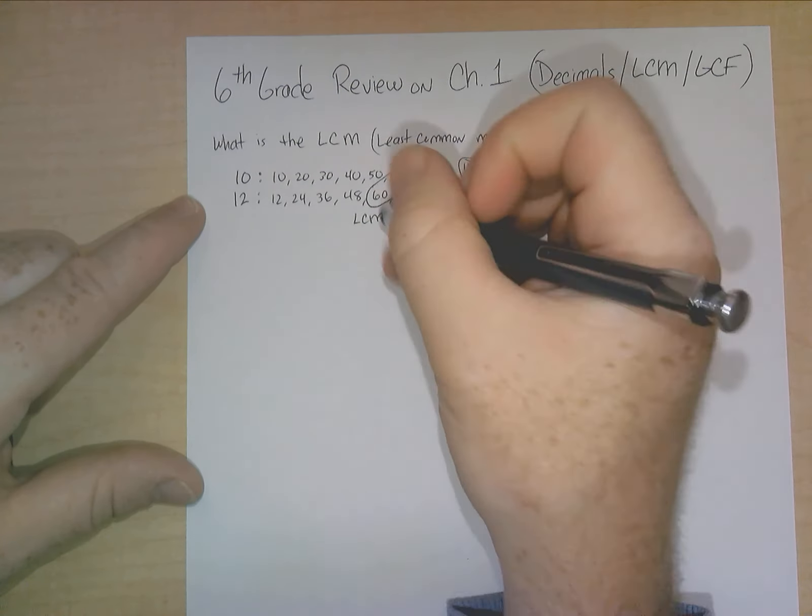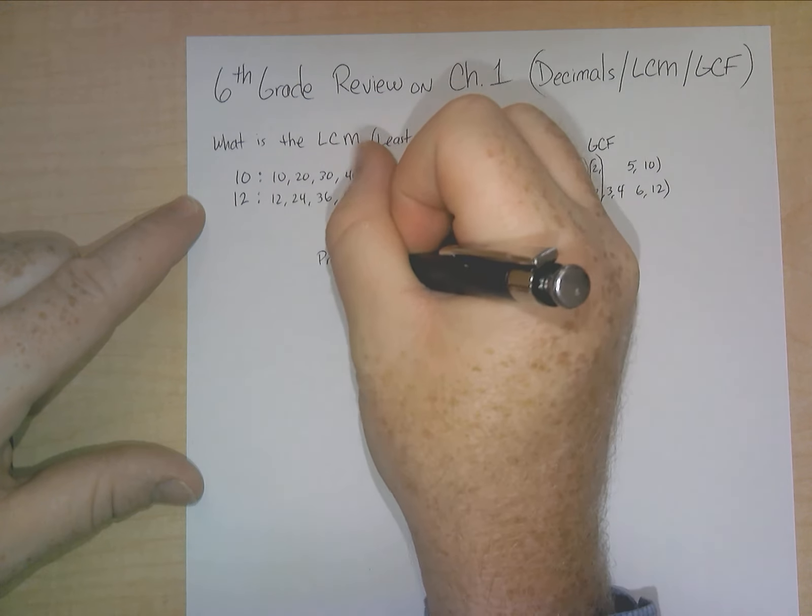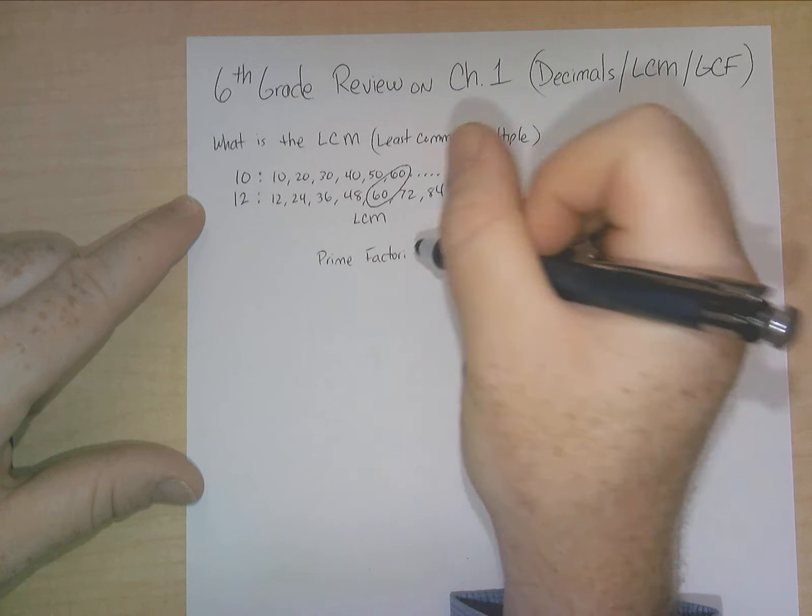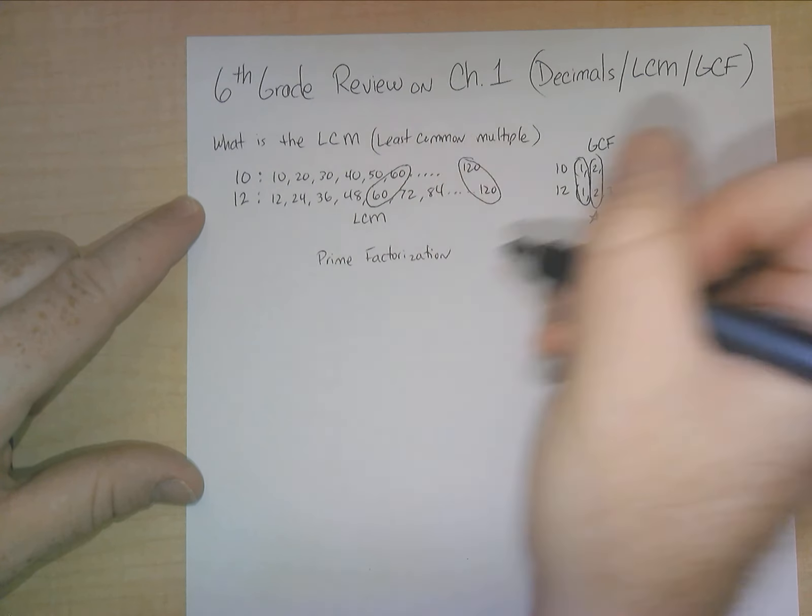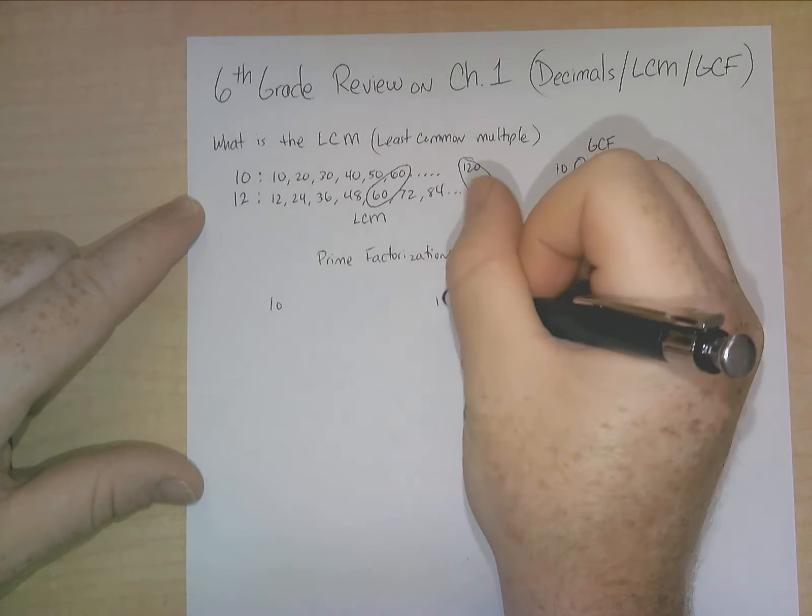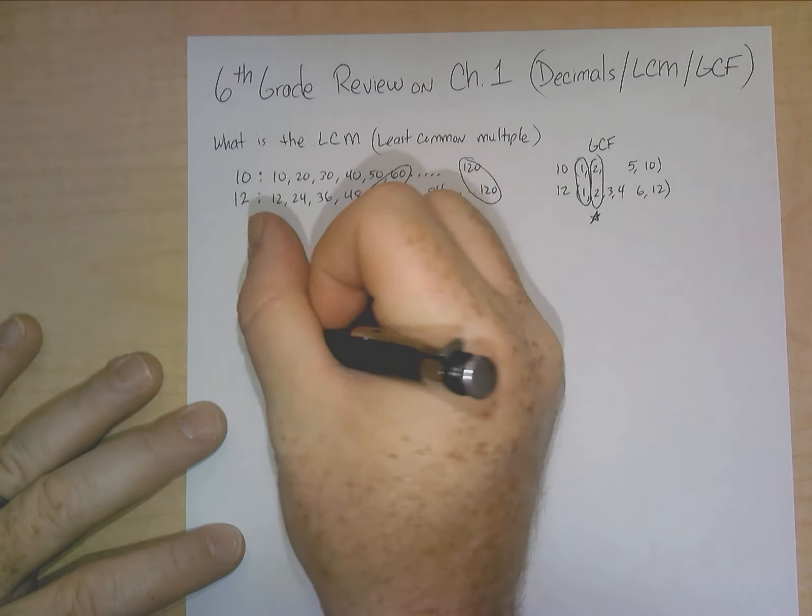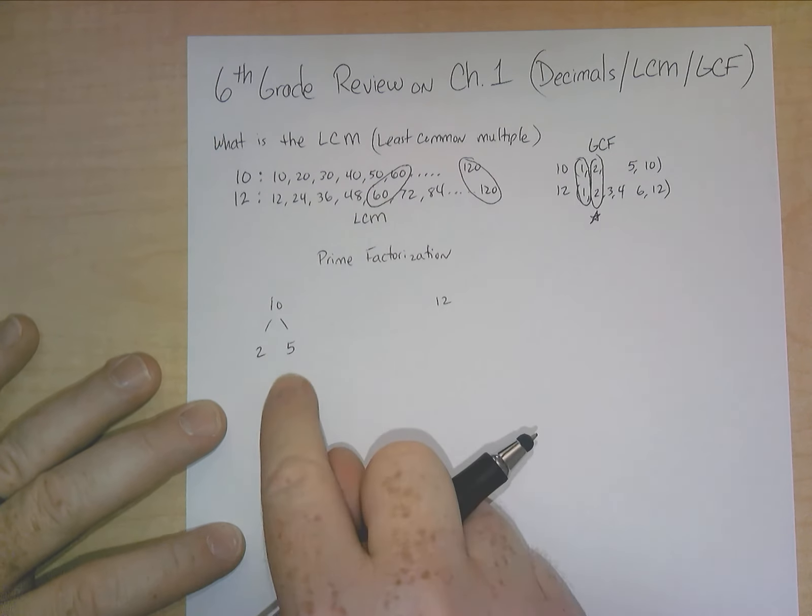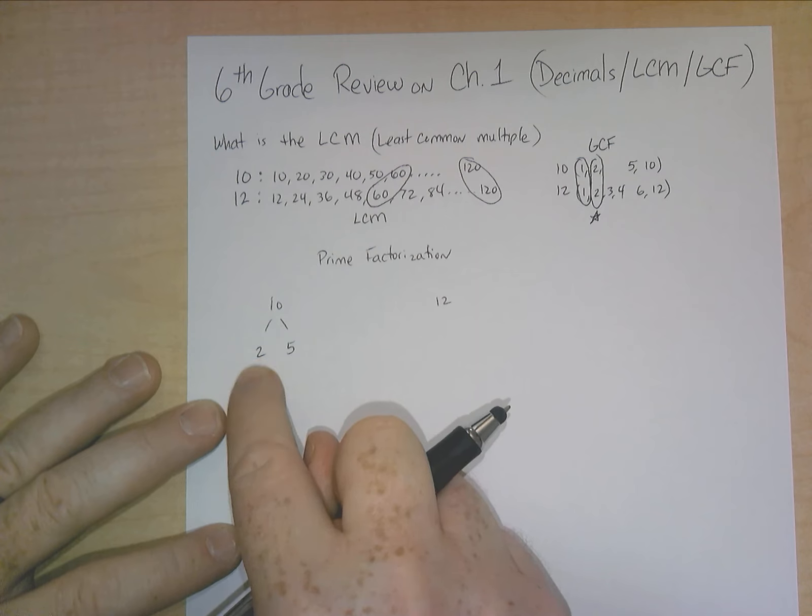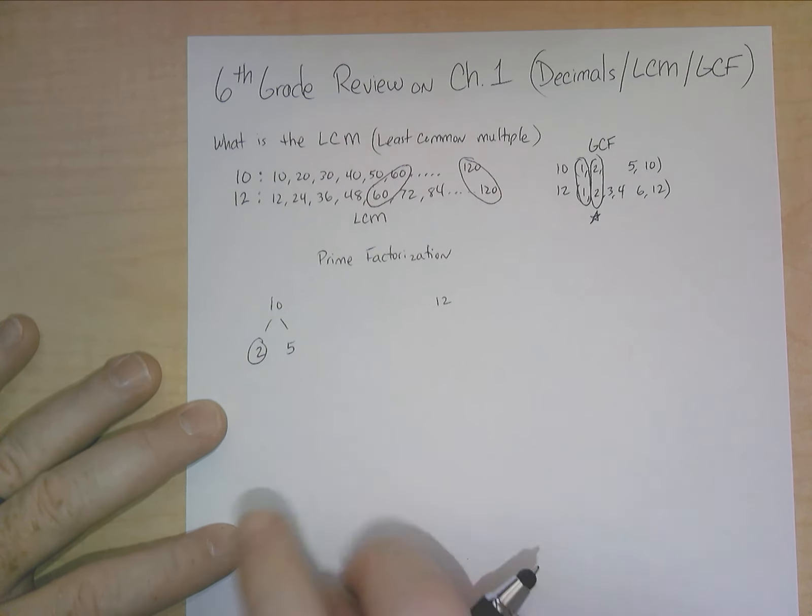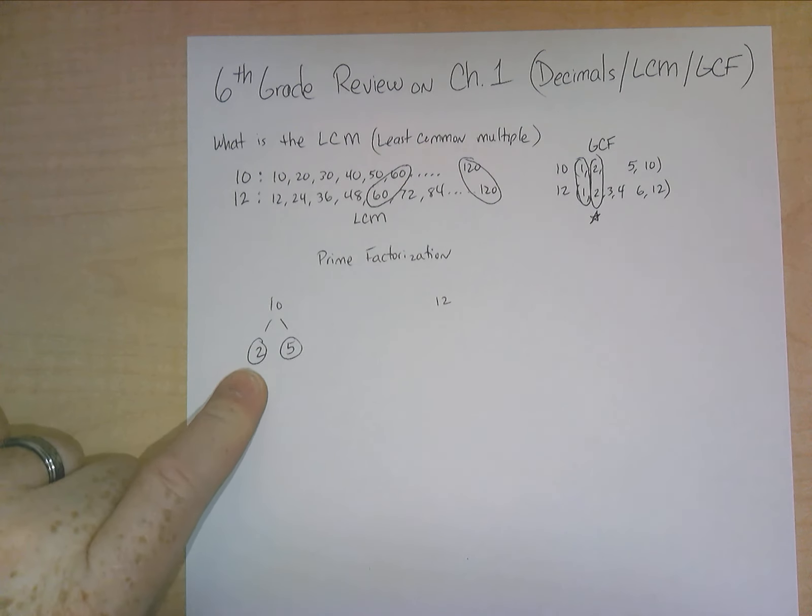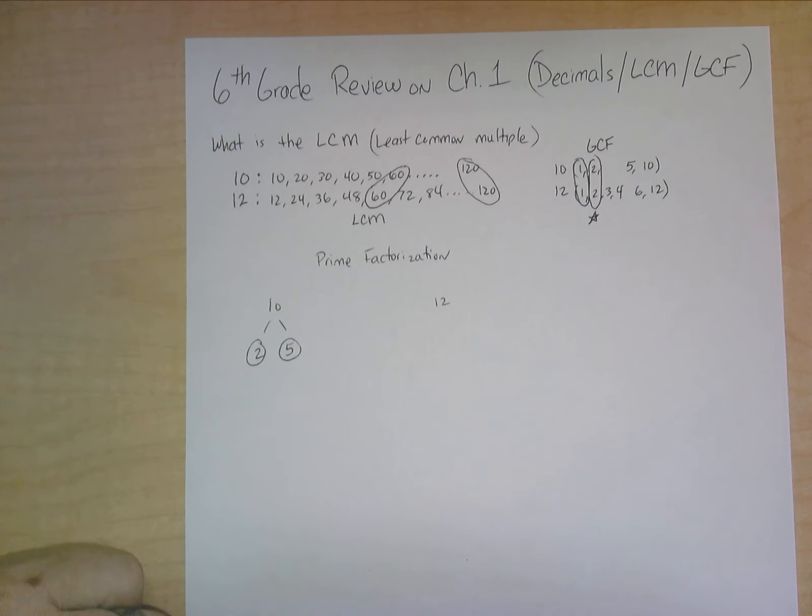So what we do here is we use the prime factorization first. Prime factorization is just breaking it down to its factors, but prime factors. And so you have 10 and 12. So you think of, okay, what two numbers make up 10? Well, let's see, 2 and 5. And basically, you just keep going, and you keep breaking down each number until you get to its prime numbers. And no other number can go into 2 except itself and 1. So this is prime. So I circle it. 5 is prime as well. There's nothing else that goes into it. I circle it.